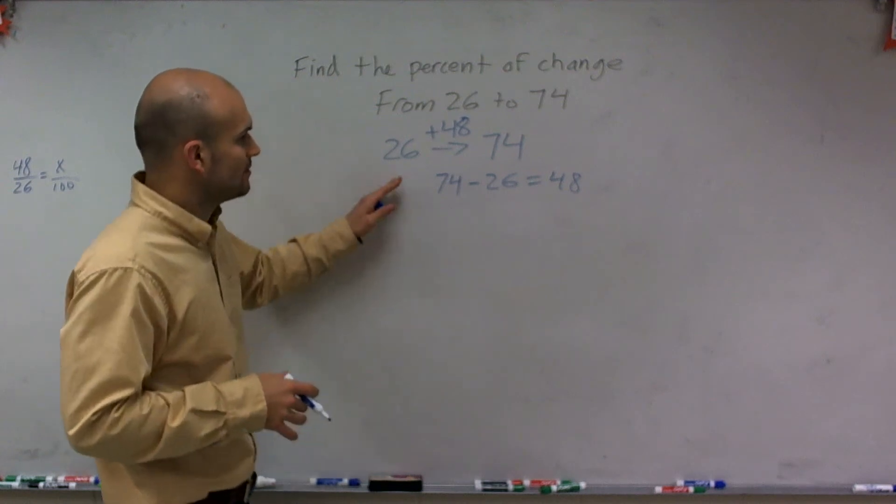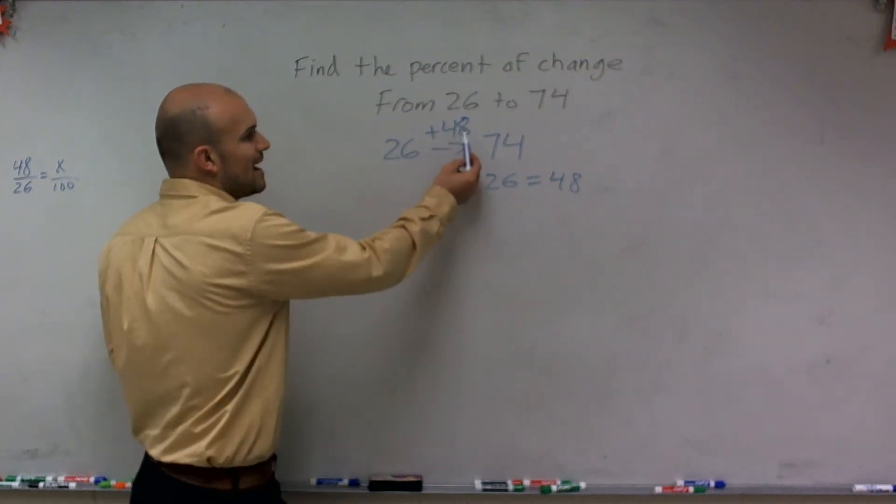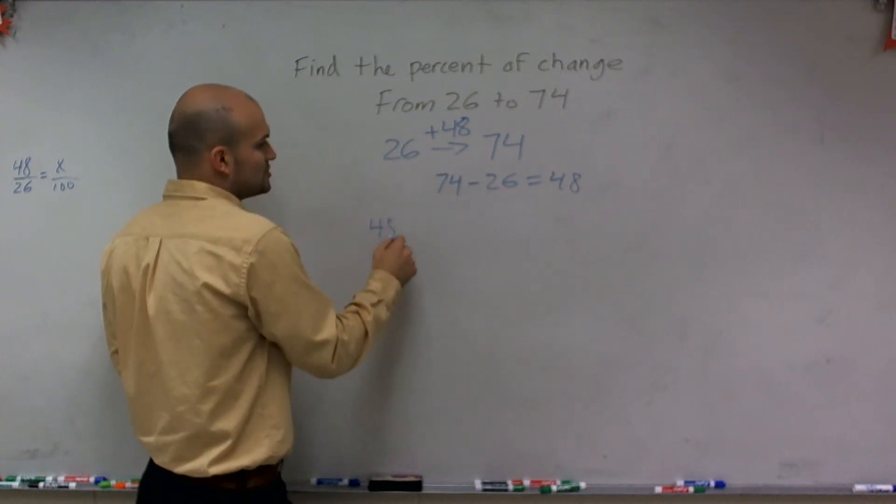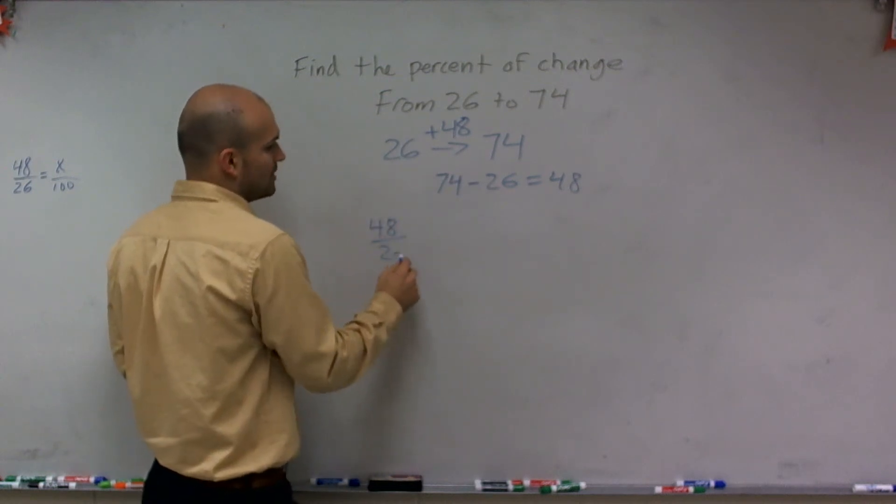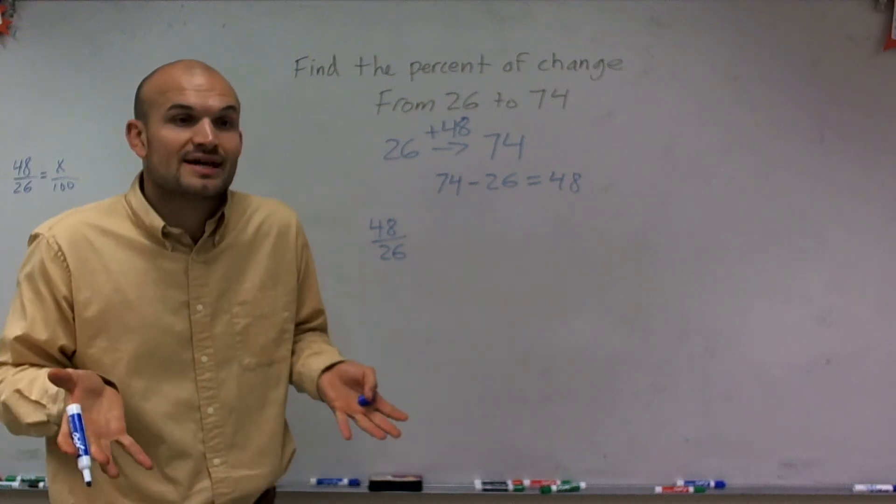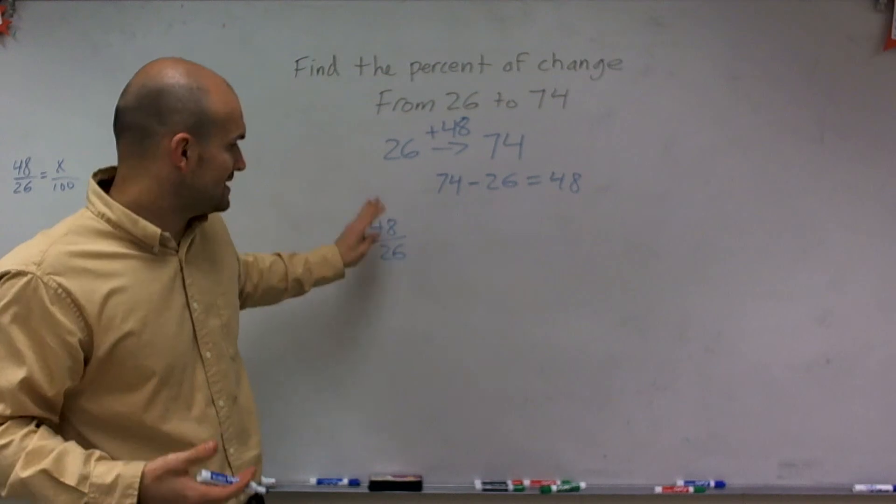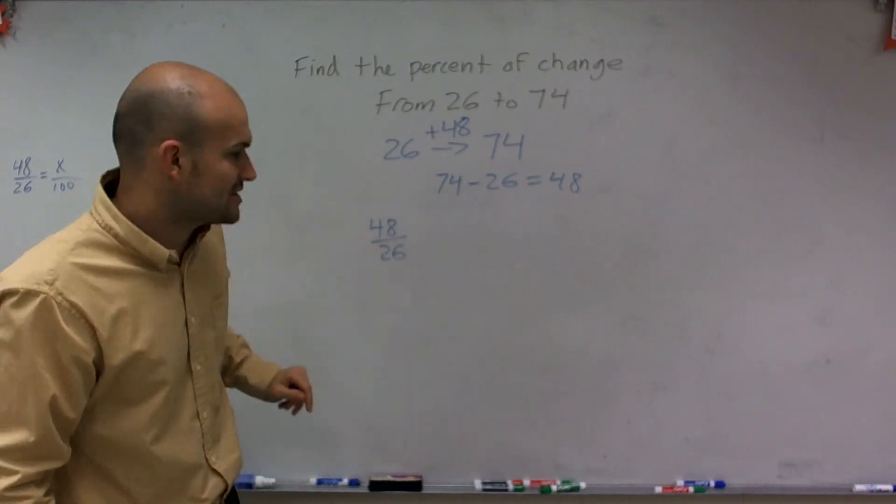And here, what we're going to notice is the amount I changed is larger than my whole. So I have changed more than the whole number that I started with. I started with 26, the amount I changed was 48, which is larger than the whole. A lot of times we call this an improper fraction.